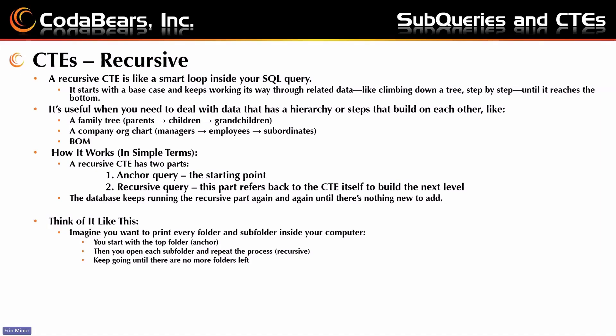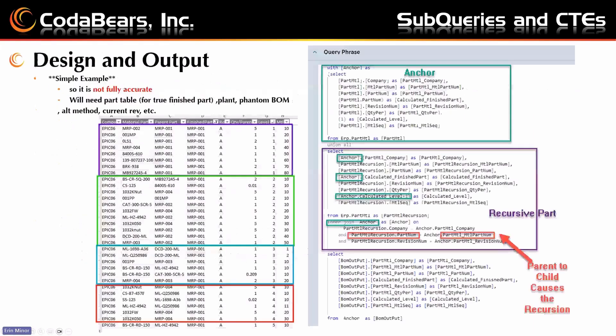Think of it like a folder with a subfolder structure. There might be a master folder with five folders inside, and each of those subfolders has documents. The recursion goes through and sees — here's one folder, open it and see if there are any children attached. Oh, there's another folder. Oh, now there are files attached to that subfolder. So it goes through each level checking for children, then moves on.